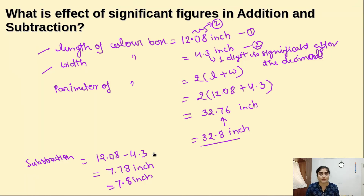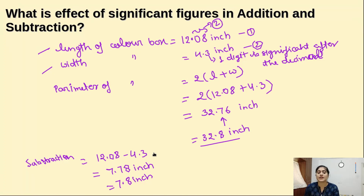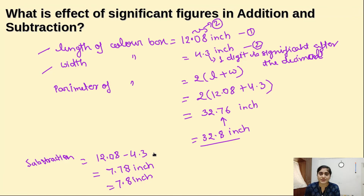So in summary: for multiplication and division, look at which value has the least total significant digits and use that in the final answer. For addition and subtraction, look at which value has the fewest significant digits after the decimal. If you have any doubts, please ask through the comment box, and if these videos are helpful, please like and subscribe. Thank you very much for listening.